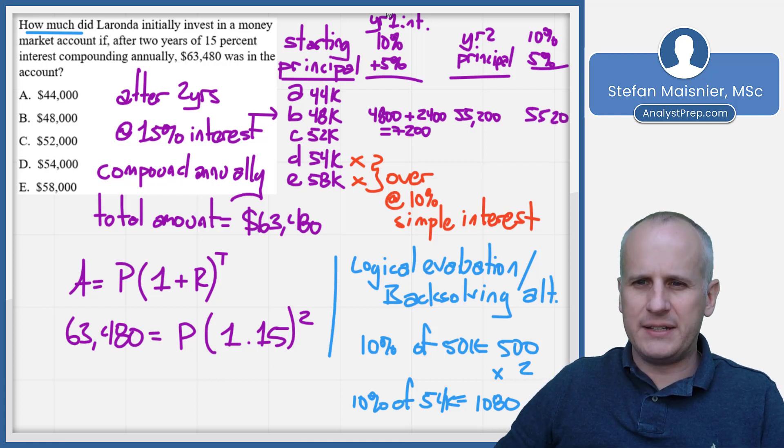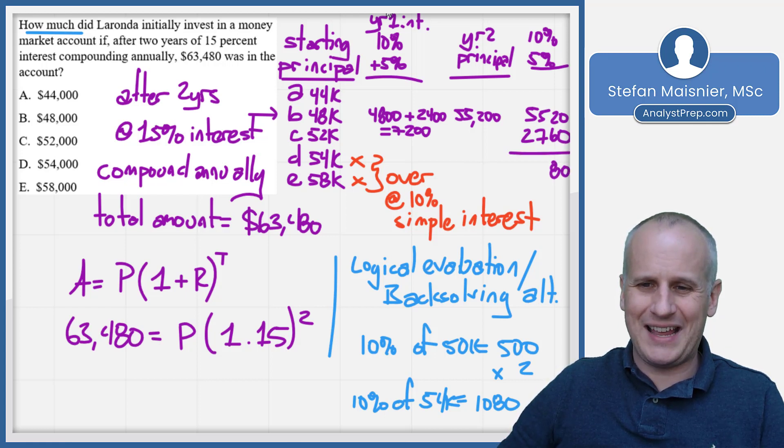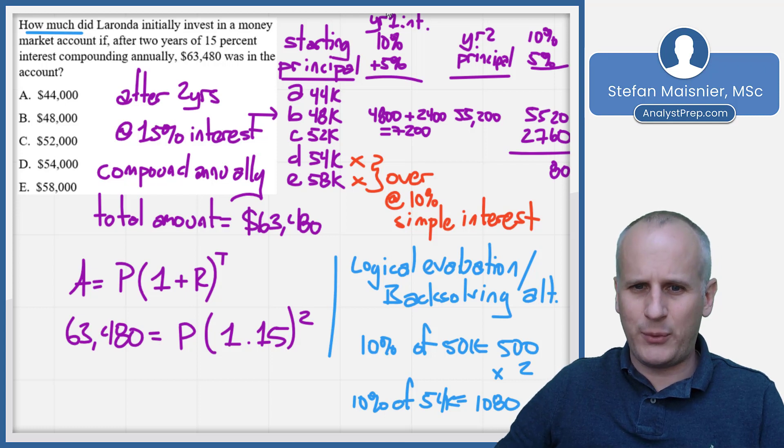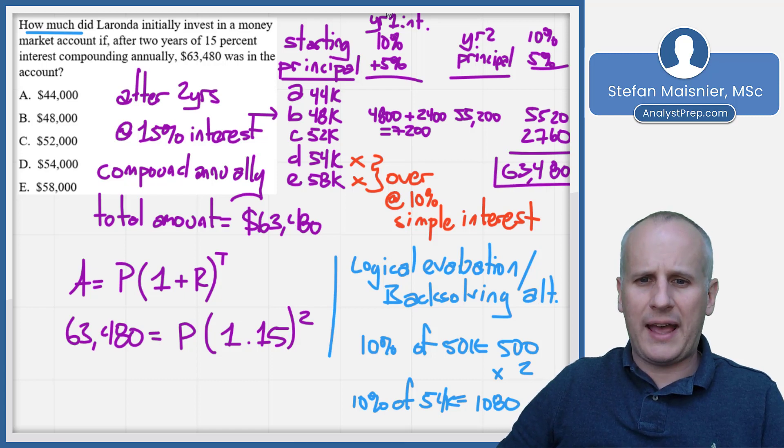So now we just got to take another 10% and 5%. So 10% is going to be 5,520. And then half of that is going to be equal to 2,760. And we go, oh, okay. If I just add this up, I can see I'm already getting to the 80 here. And sure enough, if we added it fully up, we'd get our 63,480 target at our back solving point using choice B.